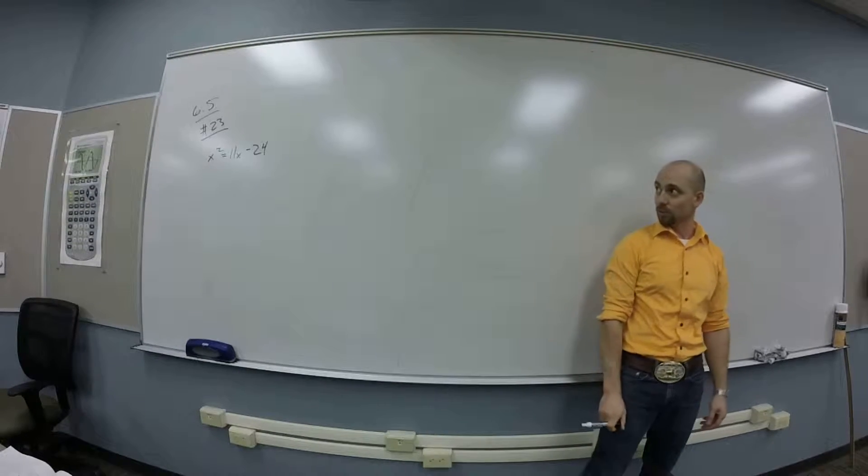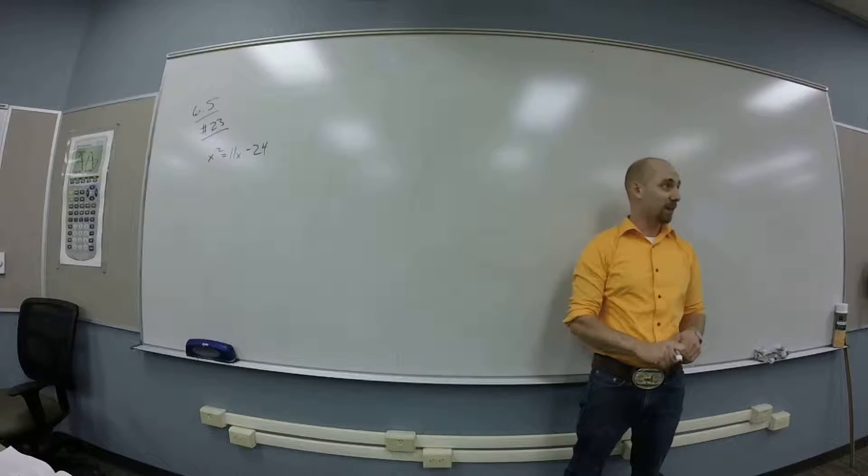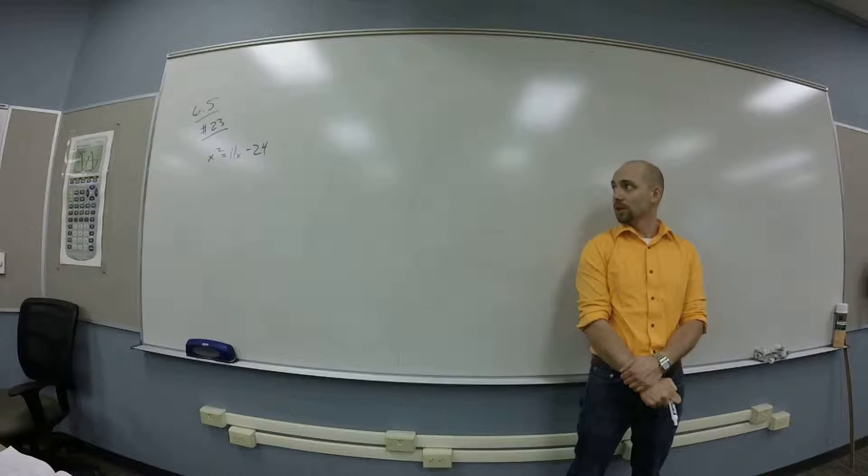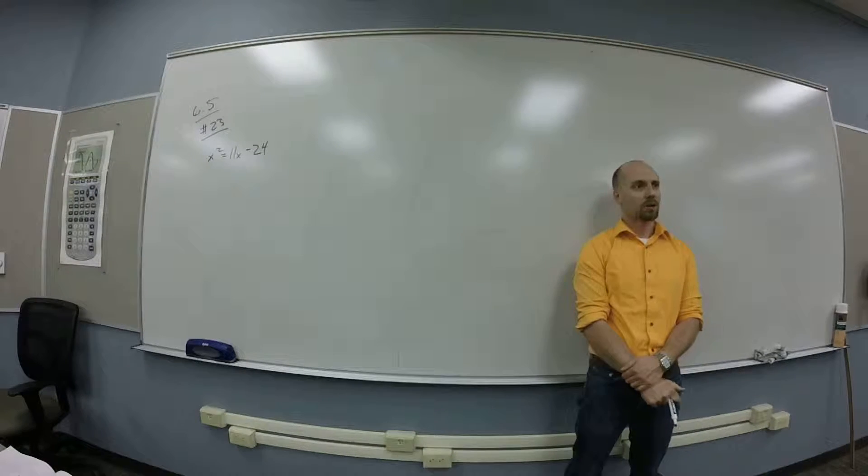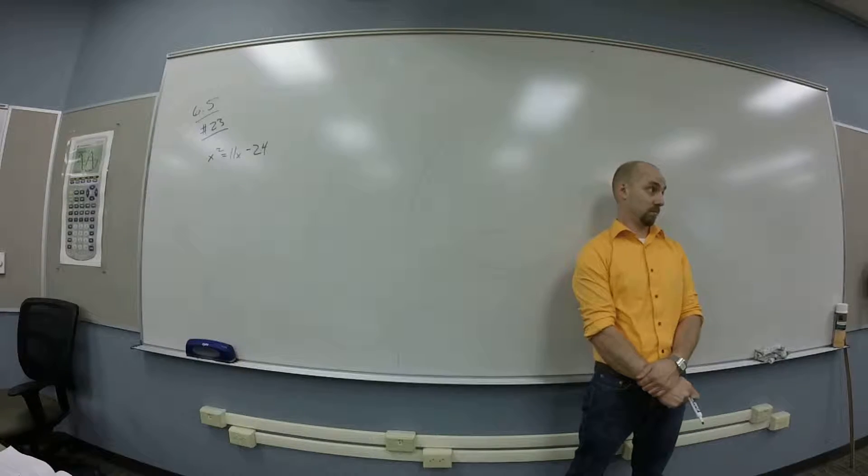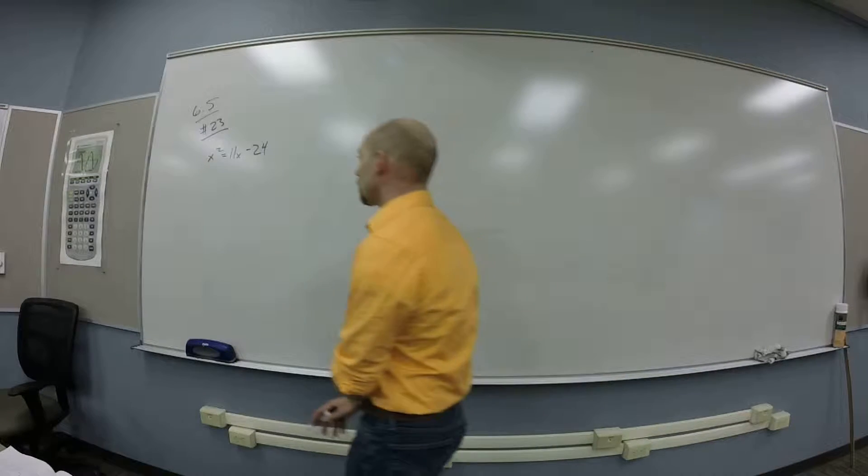Okay, so we want to do number 23 in 6.5, which says solve by factoring this thing. Okay, so how do I solve by factoring? Maybe that's in one side. Okay, let's move everything to one side.